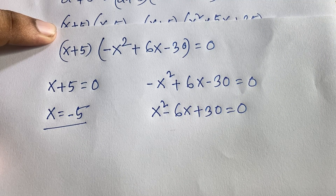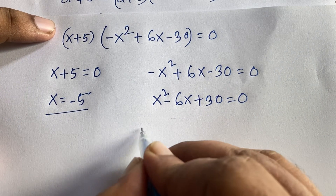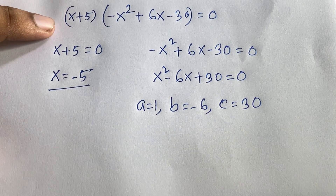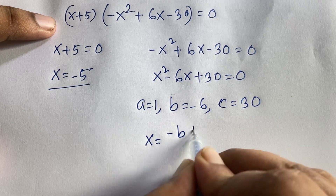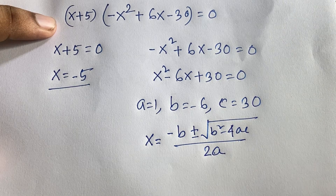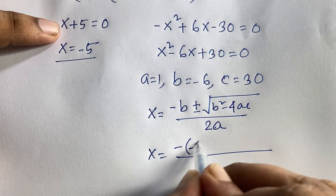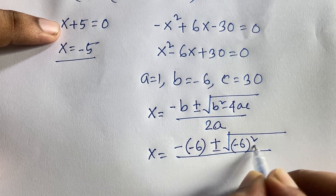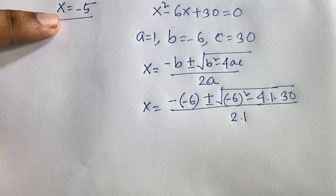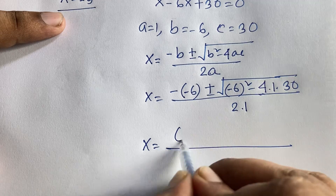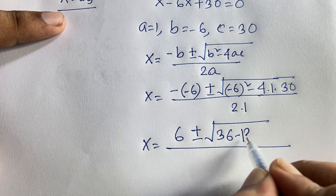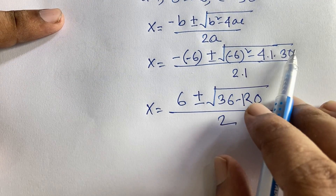To solve the quadratic x squared minus 6x plus 30 equals 0, I use the quadratic formula: x equals (minus b plus or minus square root of b squared minus 4ac) over 2a. Here a equals 1, b equals minus 6, c equals 30. Substituting: x equals (6 plus or minus square root of 36 minus 120) over 2.